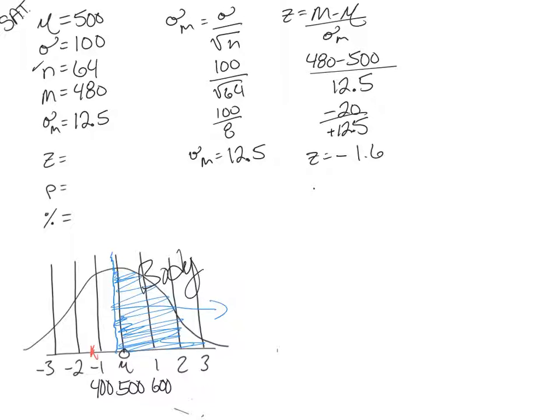So that is going to be 0.9452, or in percentage, 94.52%. So negative 1.6 gives me a proportion in the body of 0.9452, or 94.52%.